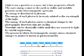Light is not a particle or a wave, but it has properties of both. The sun's energy comes to the earth in visible and invisible portions on the electromagnetic spectrum, and its energy is distributed in photons.